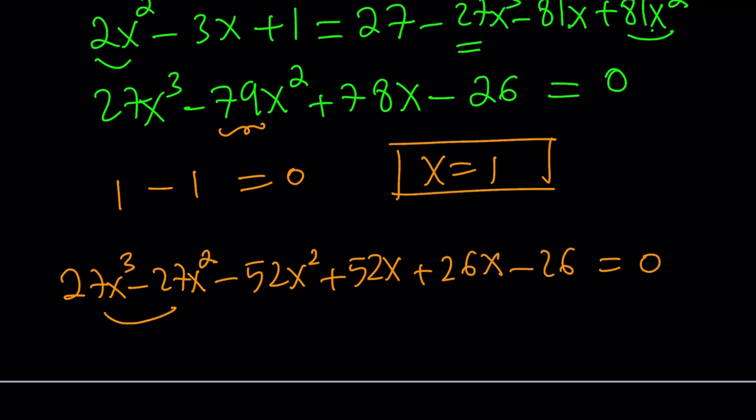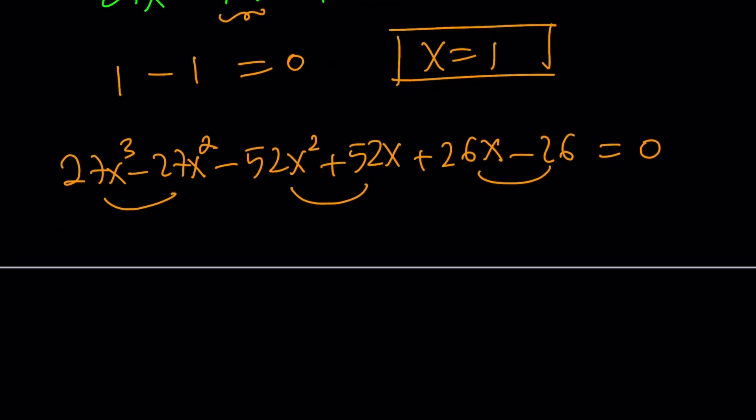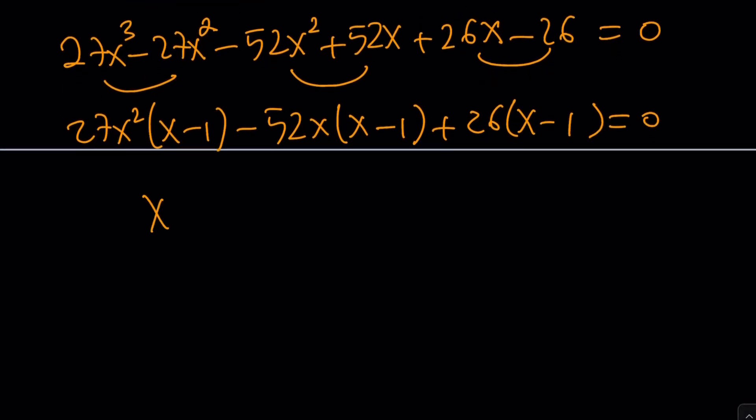Now, we can factor by grouping. This is 27x squared times x minus 1 minus 52x times x minus 1, a technique we commonly use. So hopefully you're used to this by now. And x minus 1, take out, and you're going to get a quadratic which should be easy to solve. Obviously. But those numbers are large, and I'm pretty sure you can solve it. It's just going to be a little bit of factoring, so on and so forth.